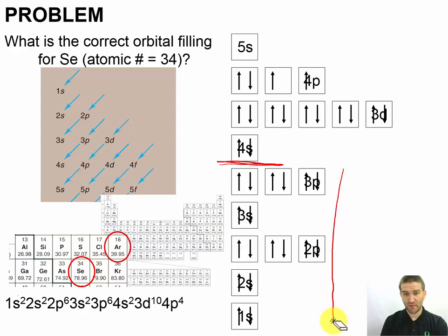So, this portion looks like argon, and so when we make our compressed notation, our condensed notation, we're going to say argon in brackets, followed by the things that were above it, 4s², 3d¹⁰, and 4p⁴.